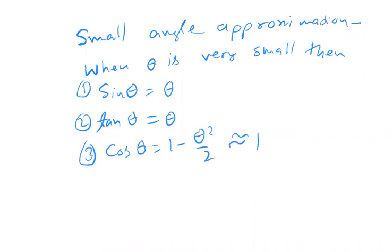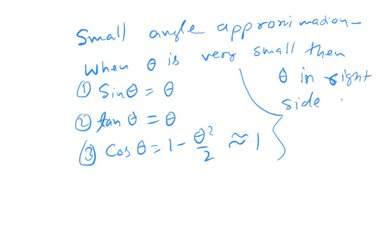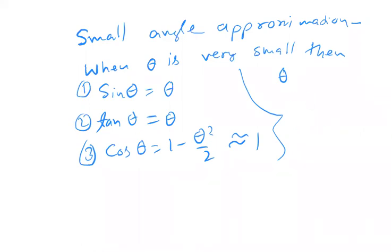When we write theta on the right side — theta on the right side — it must be in radians. Theta must be in radians. This is a key requirement for the small angle approximation to be valid.